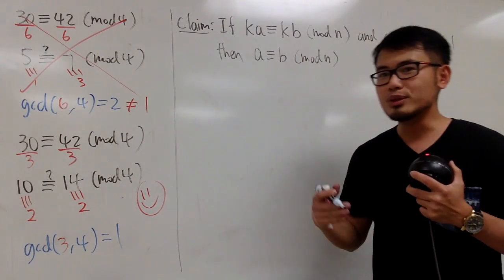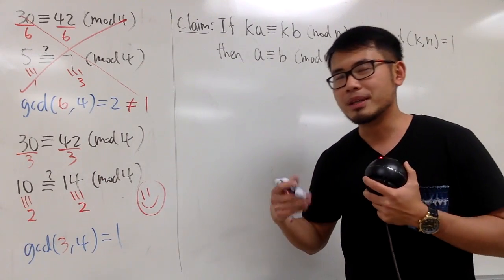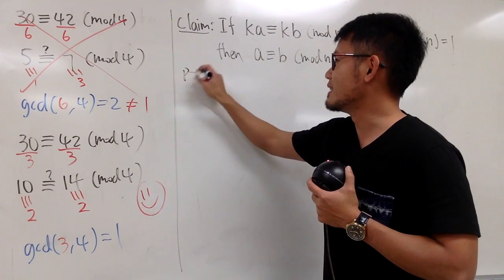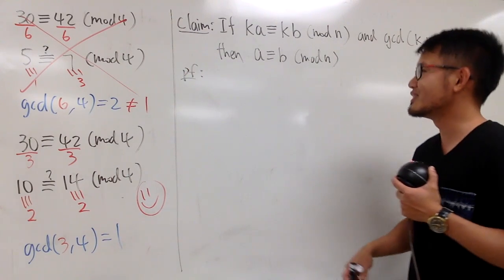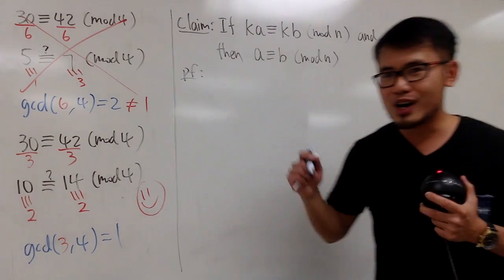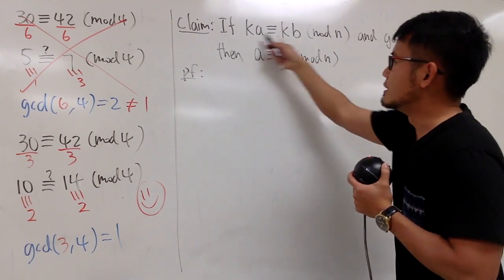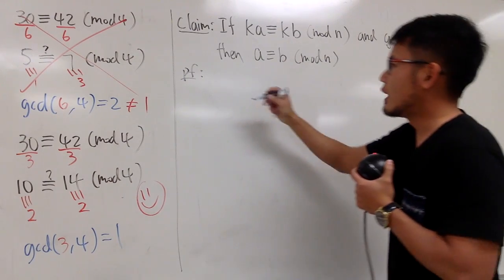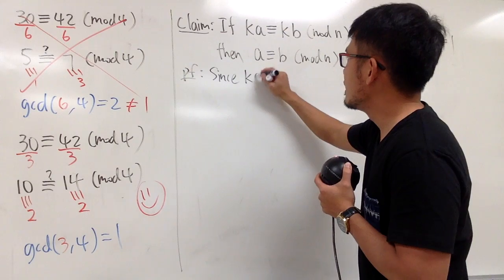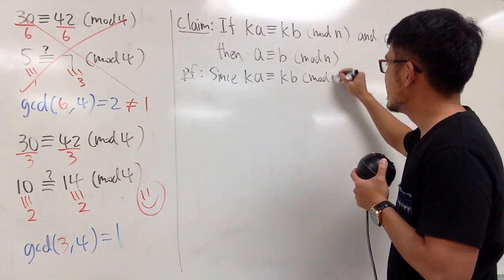And technically, I shouldn't be using the word divide. I should say multiply by the multiplicative inverse on both sides. But yeah, dividing is dividing. Anyway, you guys see what I'm doing anyway. So, here we go. Here is the proof for this. Let me start with this right here. So, I will just say, starting, I will just say since we have ka congruent to kb mod n.